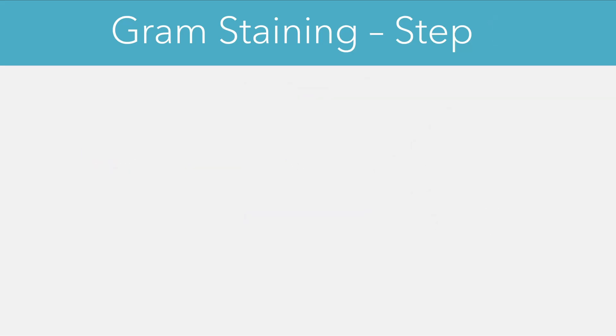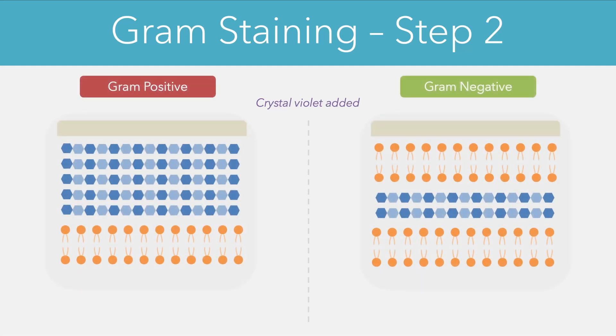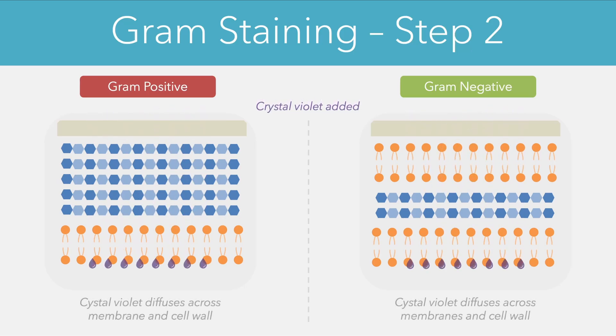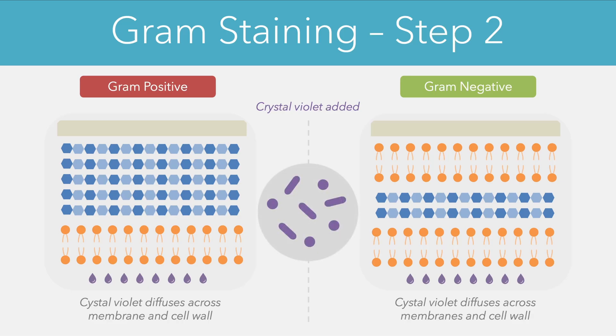The first reagent we add in this process is a substance called crystal violet. To understand how these substances work, we're going to split the slide into gram positive and gram negative cells. When we add crystal violet it diffuses across all of the outer layers and enters inside the cell, and this happens in both gram positive and gram negative types. Crystal violet has quite a heavy purple color, so if we looked under a microscope at this point all of the cells would be stained purple.